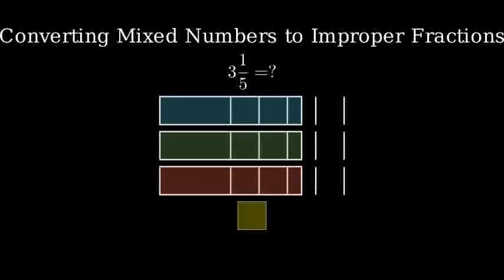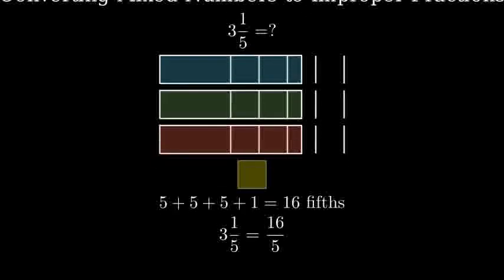Now, let's add up all our fifths. We have five fifths from the first whole, plus five fifths from the second whole, plus five fifths from the third whole, plus one more fifth. That gives us sixteen fifths total.